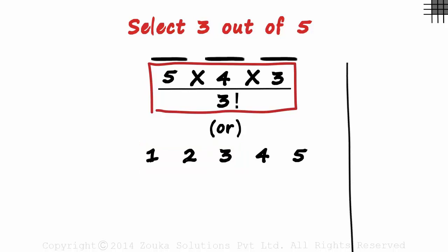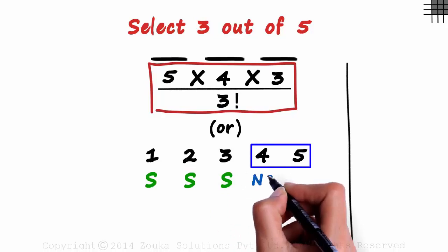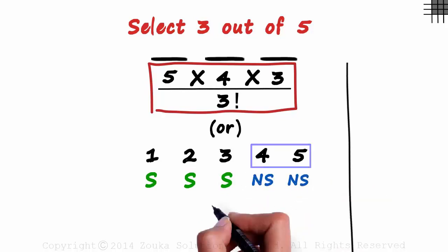We can select any three objects and put them in the S category. And as the other two are not selected, we put them in the NS category. There are five factorial ways in which we can arrange five different objects. As three of them are in one category,